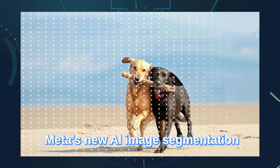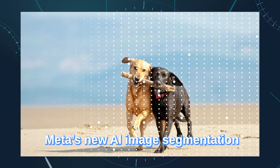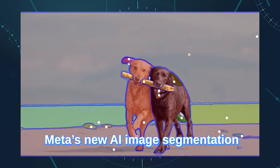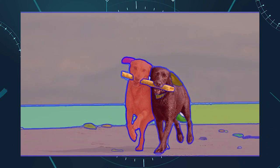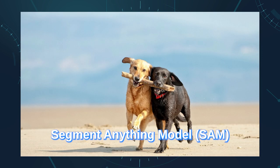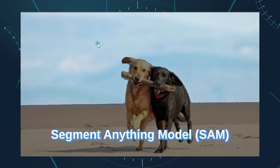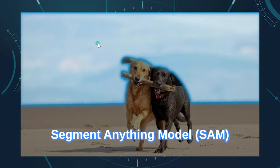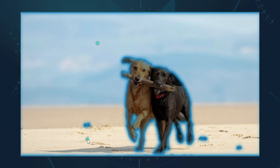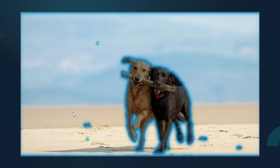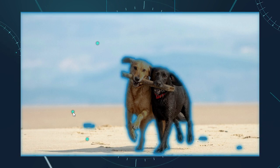Meet SAM, Meta's new AI image segmentation tool that deals with complex images for you. Segment Anything Model, SAM, is a new AI model from Meta AI that can cut out any object in any image with a single click.